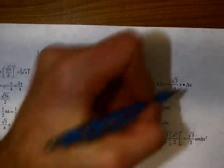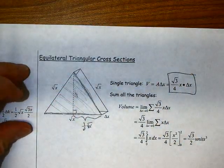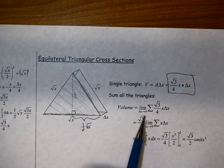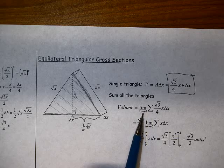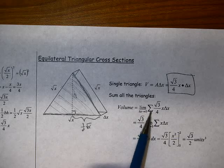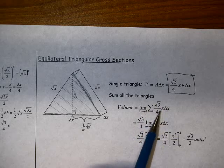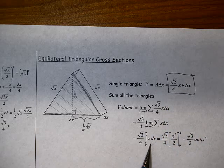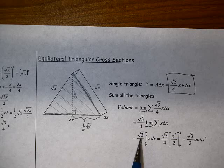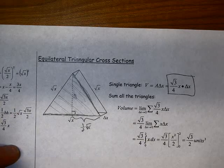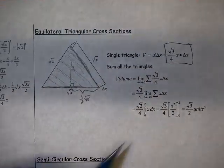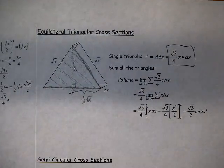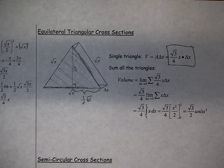Coming back, we have root 3 over 4 times x times delta x. The volume is the limit as delta x approaches 0 of the summation of all those triangles. The integrand is root 3 over 4 times x dx, integrating from 0 to 2. From there, it's just finding the antiderivative, substituting 2 and 0, doing the subtraction, and we get root 3 over 2 cubic units.